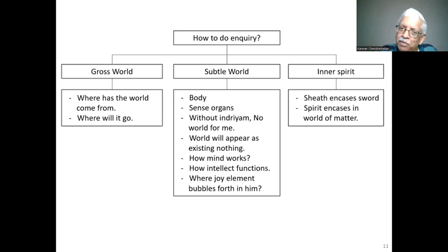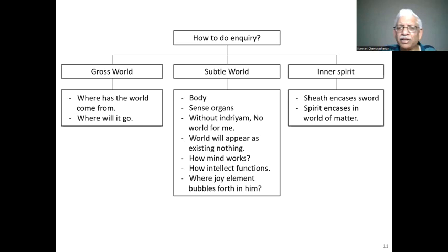How does the mind become ready? By developing the four D's — discrimination, dispassion, desire, and discipline — and constantly practicing. If you haven't done Tattva Bodha, go back and do Tattva Bodha and Atma Bodha. Continue this Upanishad study and you will realize what is expected. With this I close today's session.